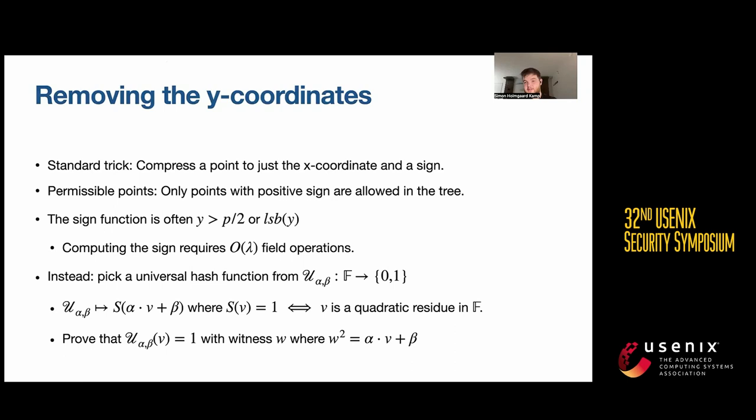It's easy to prove whenever something actually is a quadratic residue simply by giving the witness, meaning the square root. You can show this thing in one constraint.